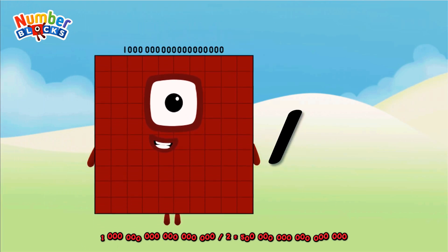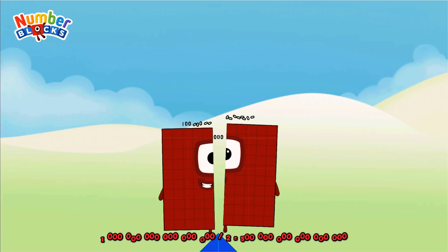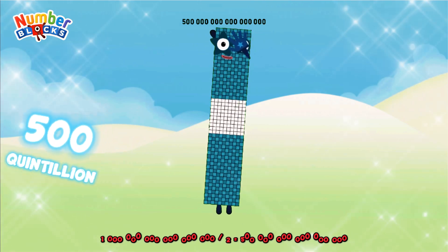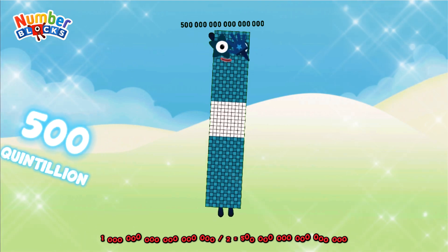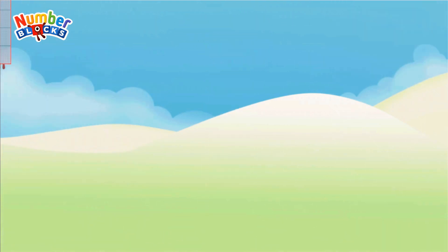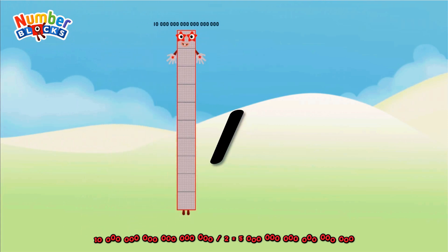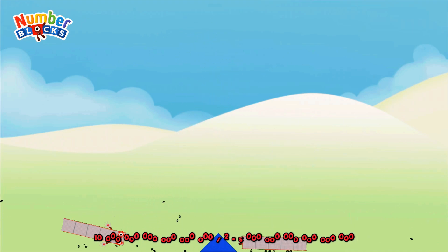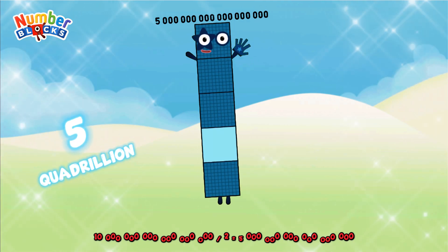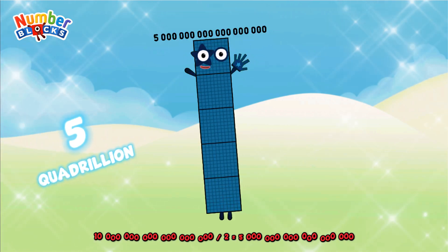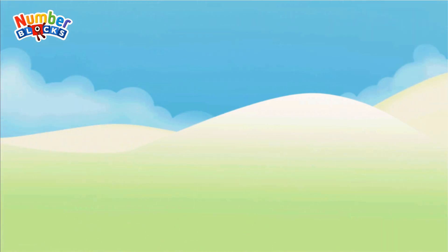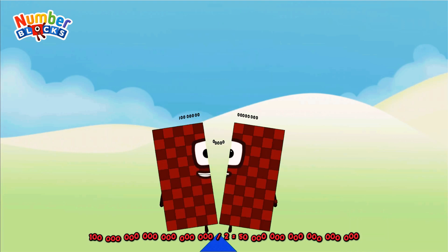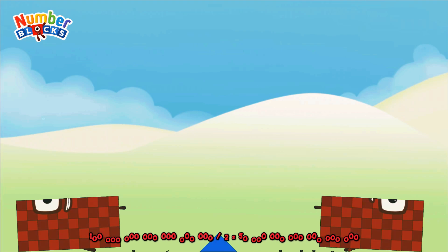One quintillion divided by two equals 500 quadrillion. Ten quintillion divided by two equals 5 quintillion. One hundred quintillion divided by two equals 50 quintillion.